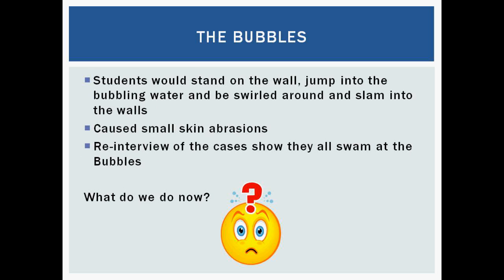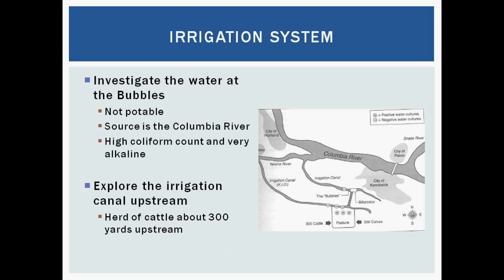Now we know this — what are our next steps? We're going to test the water. If we look closely at that irrigation system and water source, we're going to find out that the water is not potable. The source is from the Columbia River, and there's a high coliform count. The water is also very alkaline. Here's a map with the Columbia River, then the irrigation canal going down, and then the bifurcator — the machine that caused all those bubbles and churning water — and then it went down into basically two different streams.